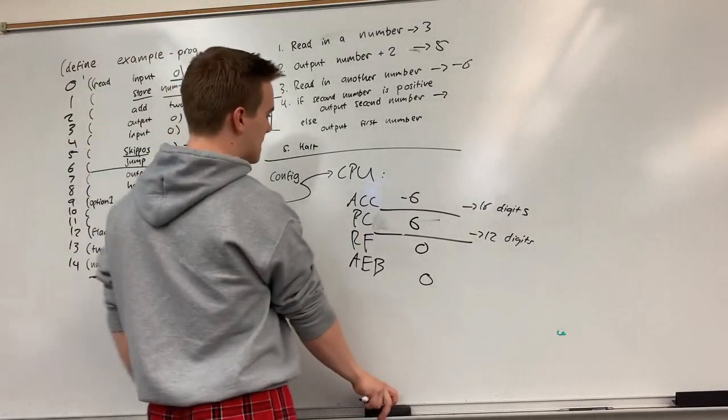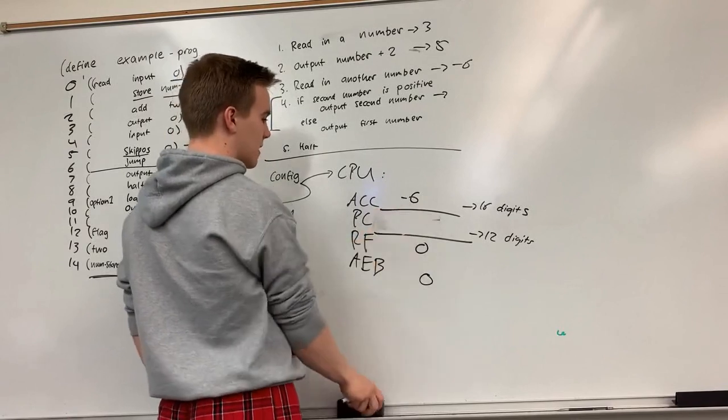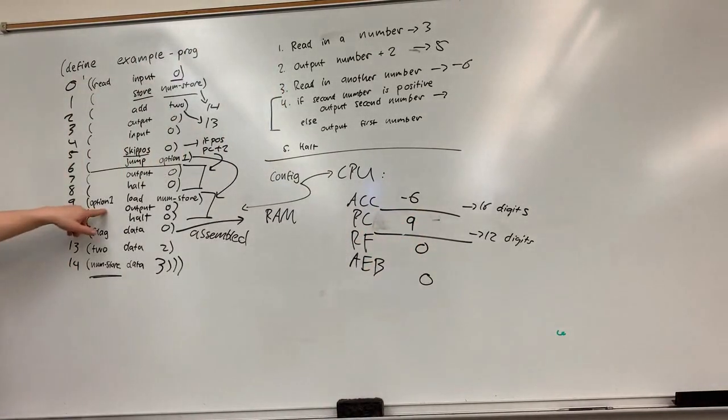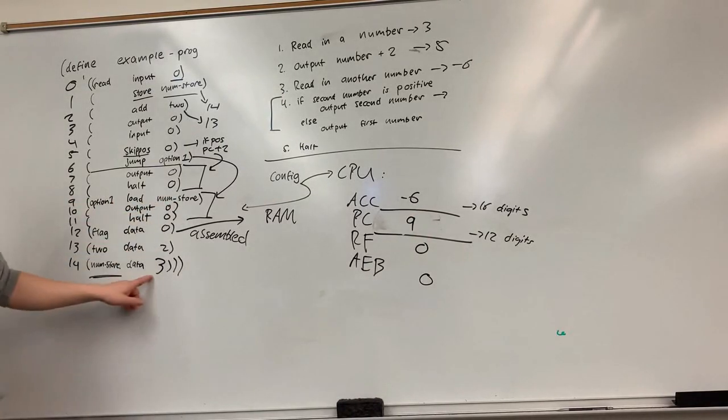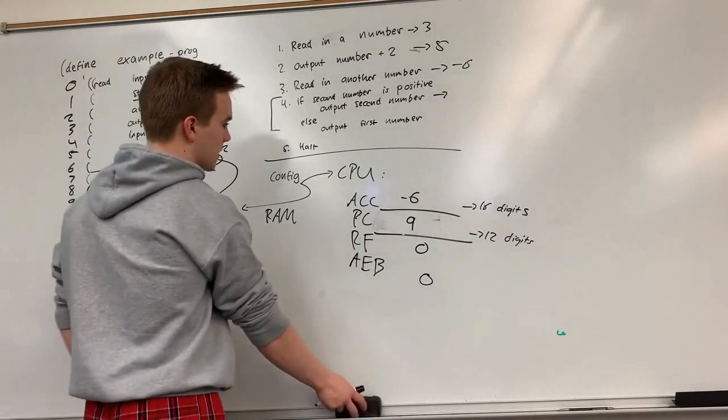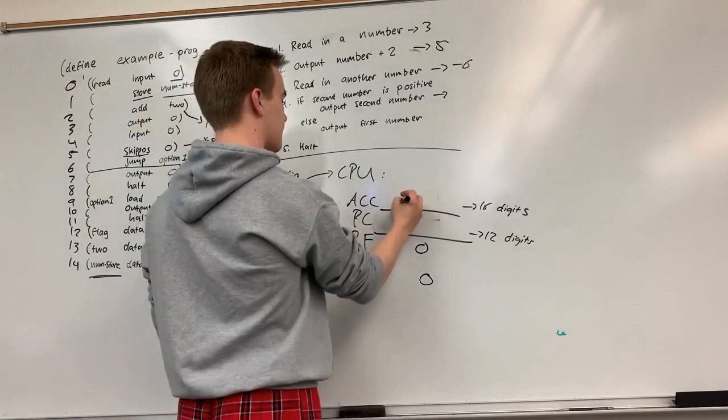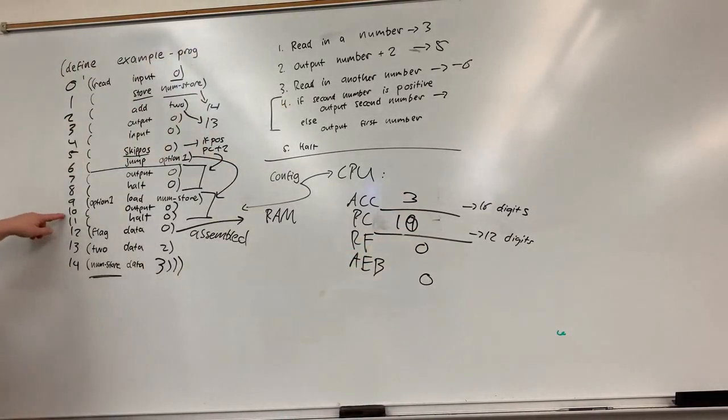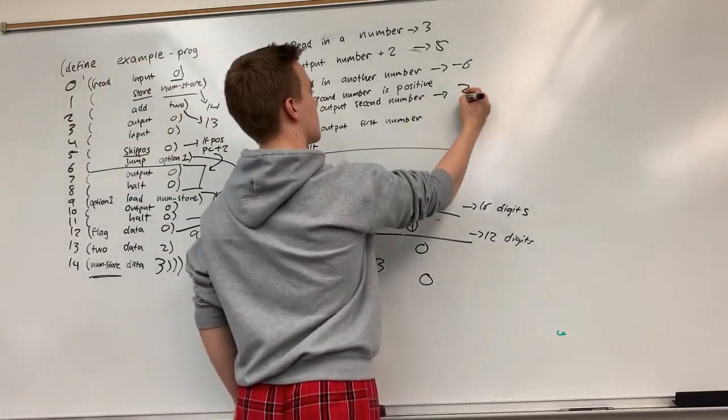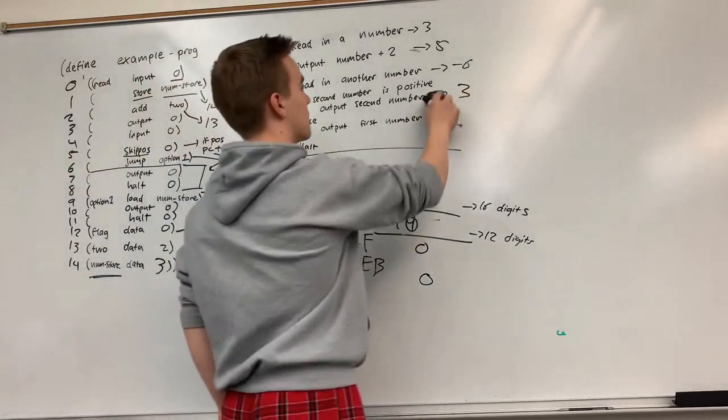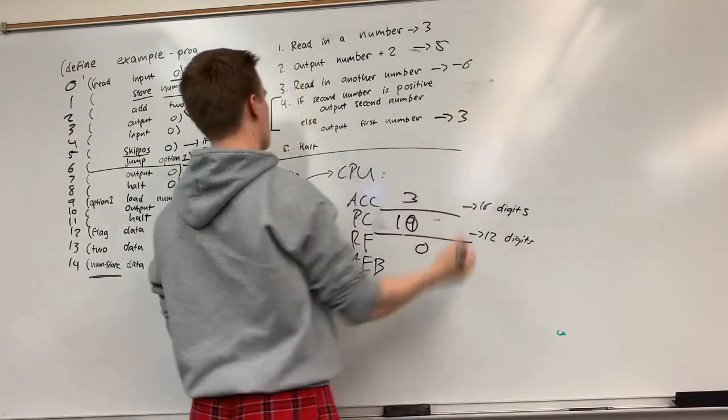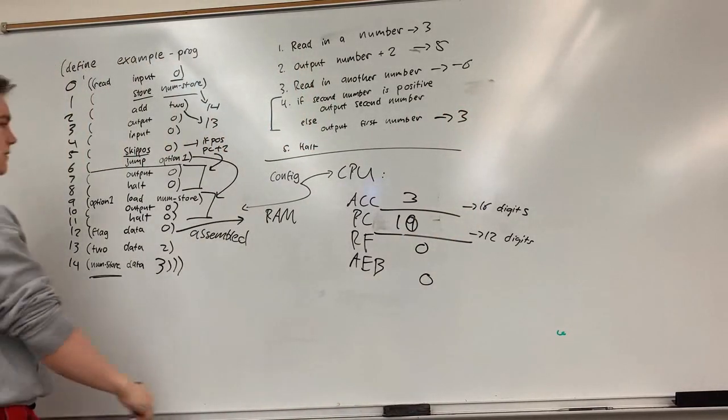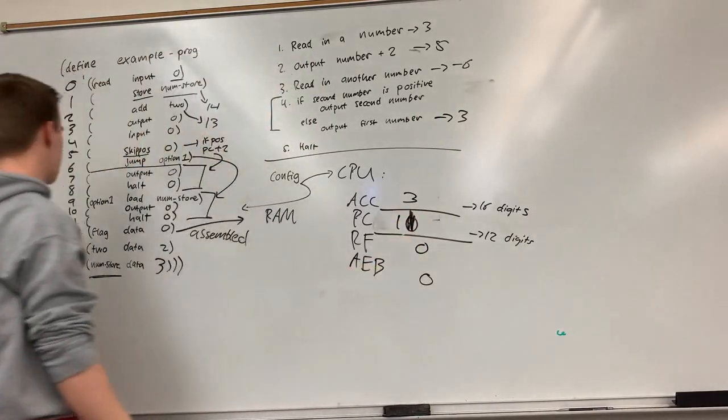Six would say jump to option one, which basically says make the PC that new address. So my PC would become nine, because that's where option one is, where I would load numstore. So load the data that's in the location numstore, which is currently three, load the number three into the accumulator. And my program counter increases by one to ten. I output zero, so here I output the number three. And then my program counter increases to 11, where I halt.